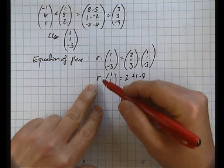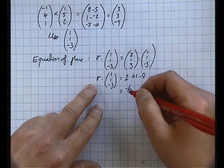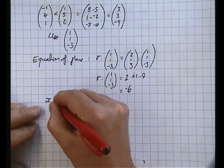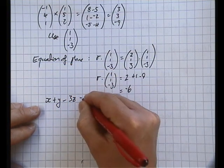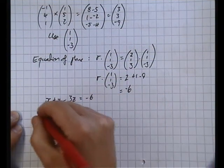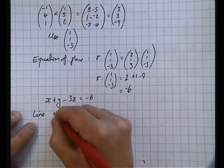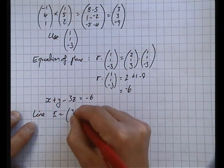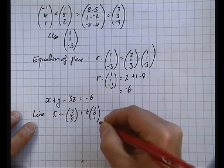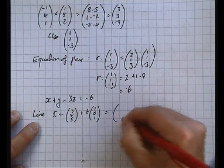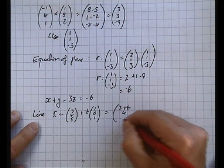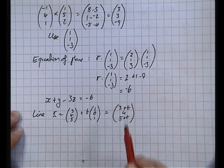So I've got the vector equation of the plane, r dot (1, 1, -3) equals -6. I'm going to rewrite that in its Cartesian form. That's x + y - 3z = -6. Now my line through the plane, remember, was r equals (3, 4, 5) plus t lots of (1, 0, 1), or in a more useful form for this purpose, (3 + t, 4, 5 + t). And in the normal way, to find out where that intersects the plane, I'm simply going to substitute this x, y, and z form into that equation.